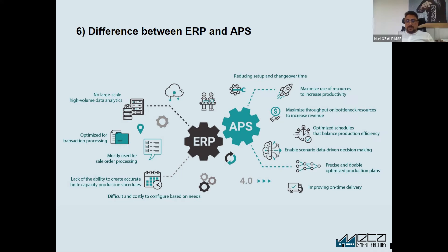Another advantage of APS is the ability to execute different scenarios. Based on your configuration, you can change some settings and when you reschedule, your result will be totally different. In ERP, it is only input data and you will see what you input in the end — ERP will not optimize or create different scenarios. But in APS, you can create different simulations, compare many metrics, and make better decisions.